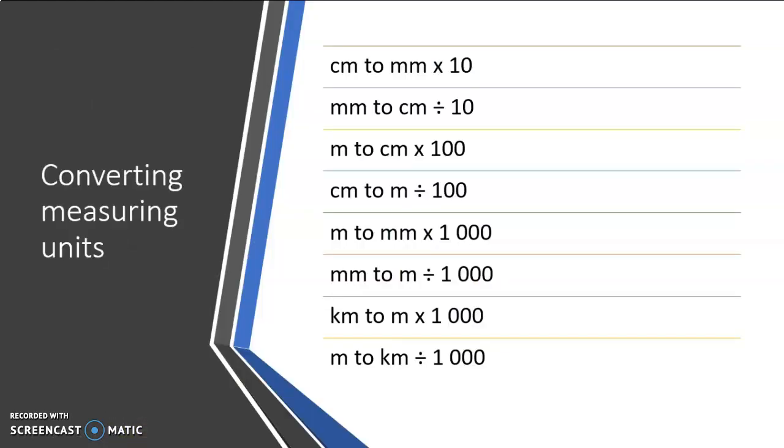When we convert measuring units, we do it as follows. When we go from centimeter to millimeter, we have to multiply with 10 since there are 10 millimeters in one centimeter. When we go from millimeter to centimeter, I have to do the opposite or the inverse operation, which means I will have to divide by 10.